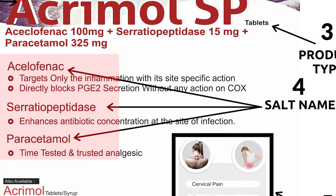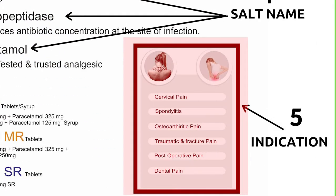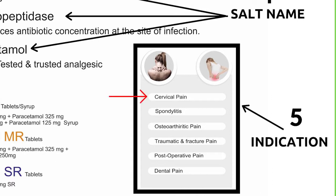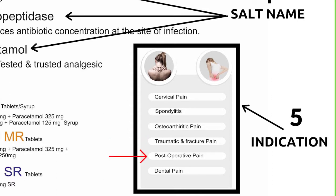The indication section helps you understand when the product can be prescribed. For this particular product, it can be prescribed for cervical pain, spondylitis, osteoarthritic pain, traumatic and fracture pain, post-operative pain, and dental pain.